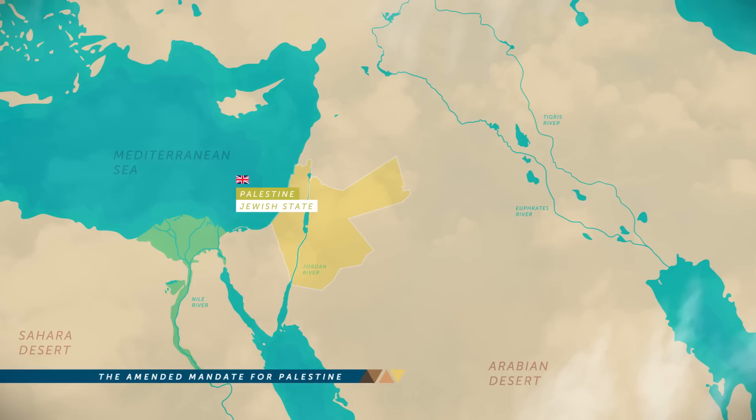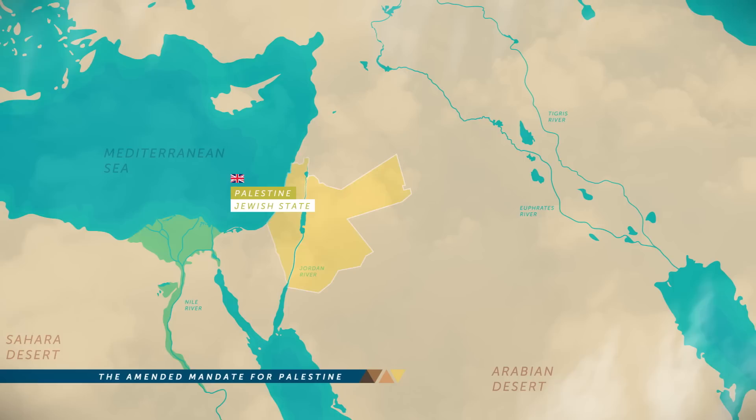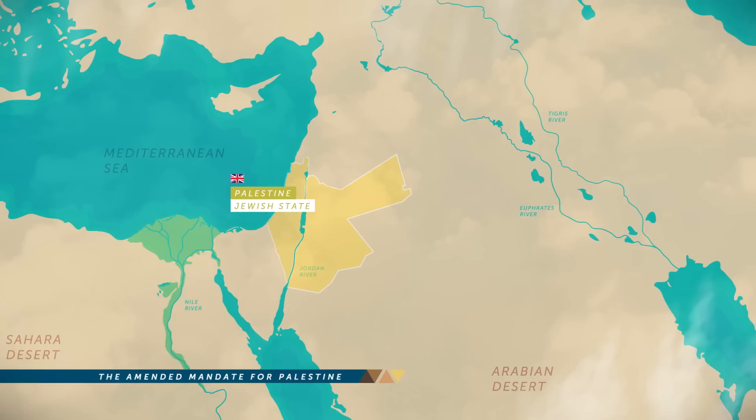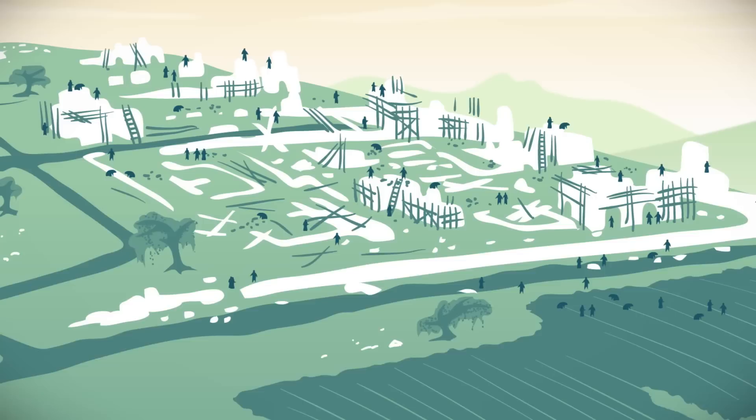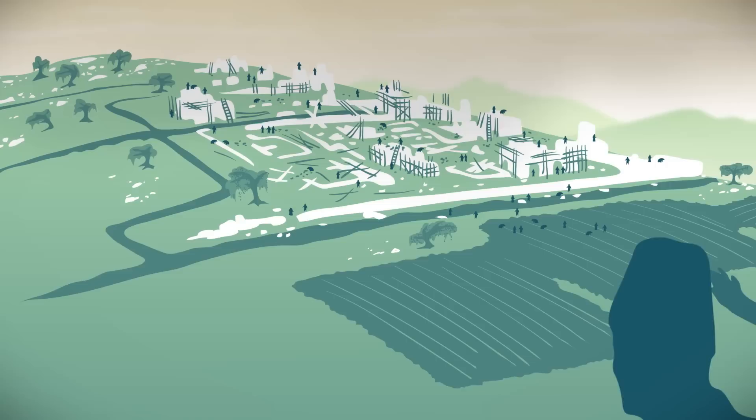The British solution was to partition Palestine and create a new Arab state in East Palestine and a new Jewish state in West Palestine. The newly created Arab state of Jordan was 77% of the territory initially planned for the Jewish national home. In the area that remained, Jewish institution building grew — but so did Arab resistance.